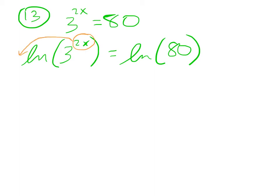You can only do that once you've taken the log. So now I have 2x times the ln of 3 is equal to the ln of 80.